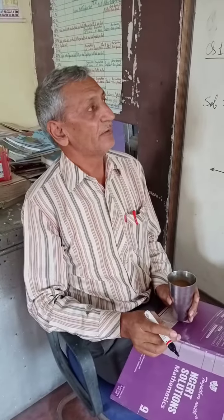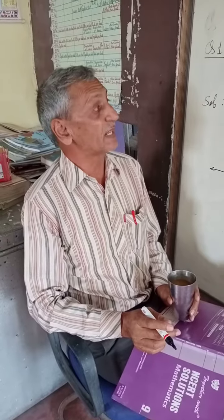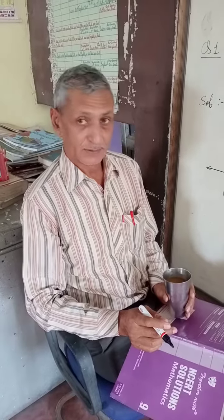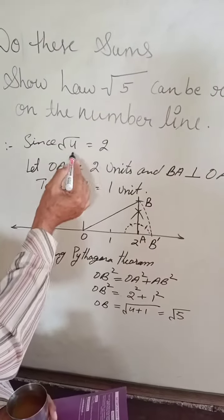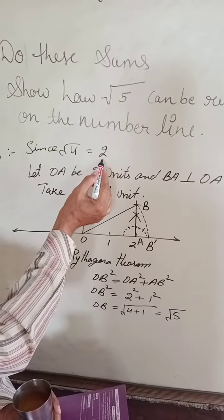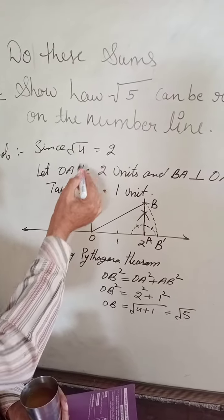Well students, we have to show how root 5 can be represented on the number line. See, since root 4 is equal to 2, this is the nearest whole square.